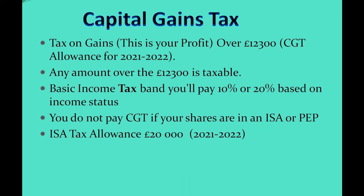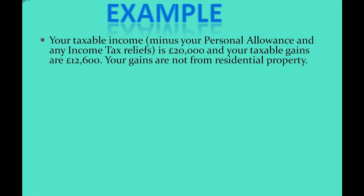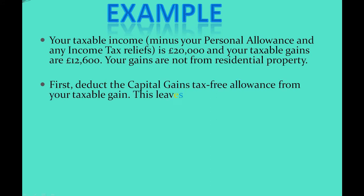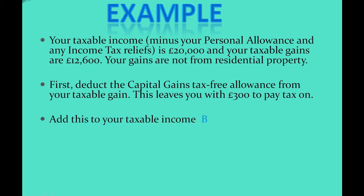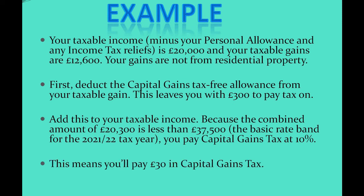Let's have a look at an example. If your taxable income minus your personal allowance and income tax relief is £20,000, and your taxable capital gains is £12,600 from stocks and shares (not residential properties), you first deduct the £12,300 capital gains tax-free allowance, leaving £300 to be taxed. Adding the £20,000 taxable income to the £300 capital gains gives £20,300, which is less than £37,500, so you are in the lower rate band and pay only 10% — meaning you owe just £30 in capital gains tax for 2021 to 2022.